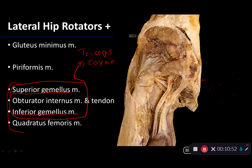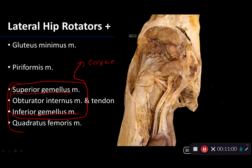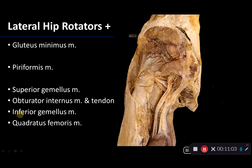The final muscle for our consideration is quadratus femoris, which you can see here. It takes its origin from the ischial tuberosity and goes out to the proximal femur — not the greater trochanter, but still the proximal femur — and it is a lateral rotator of the hip.